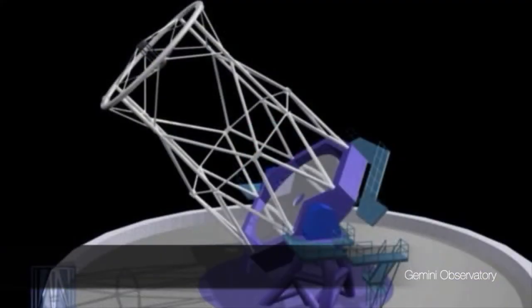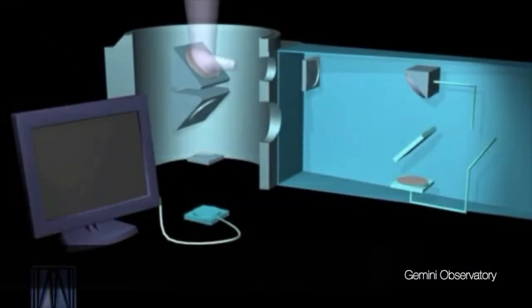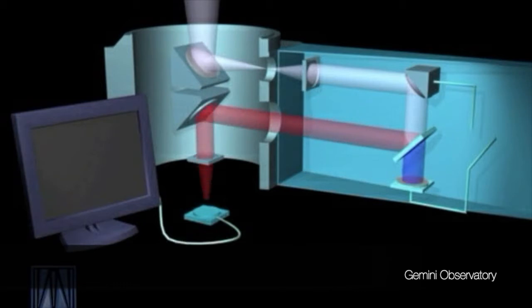Then this bright but distorted laser light is fed into the adaptive optics system. Its job is to fix the distortions. See how this looks without the adaptive optics correction turned on. You can see how blurry the image is.